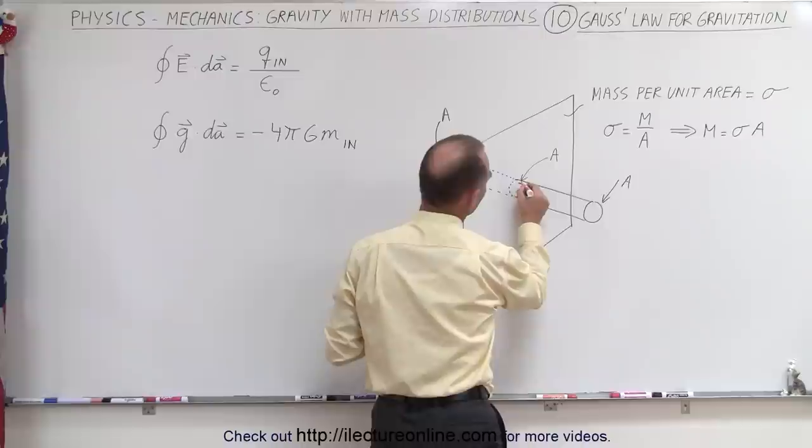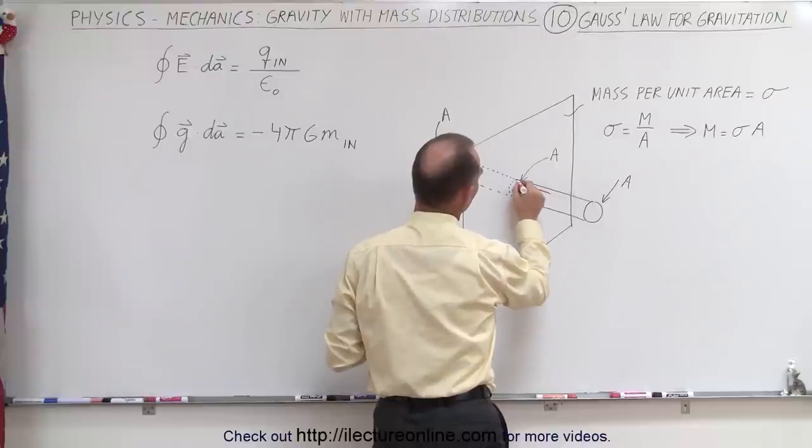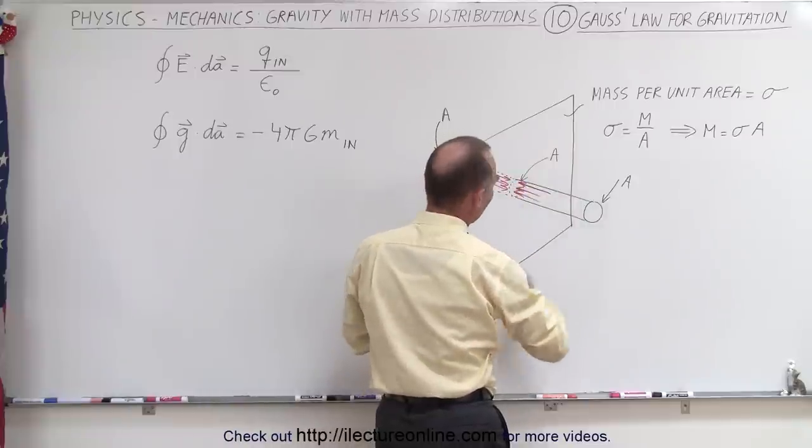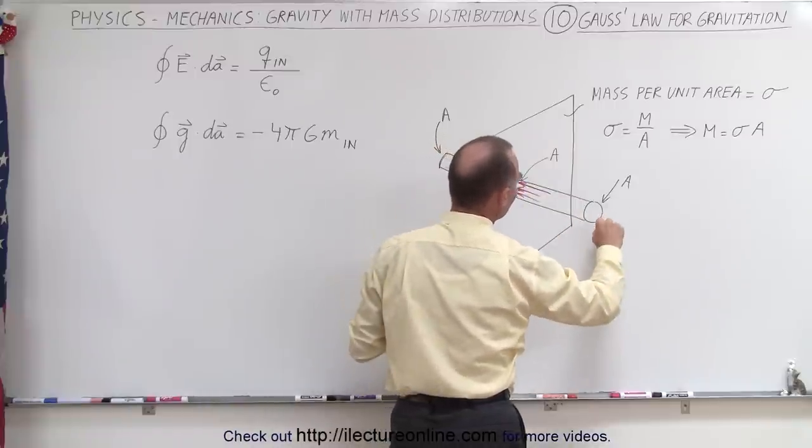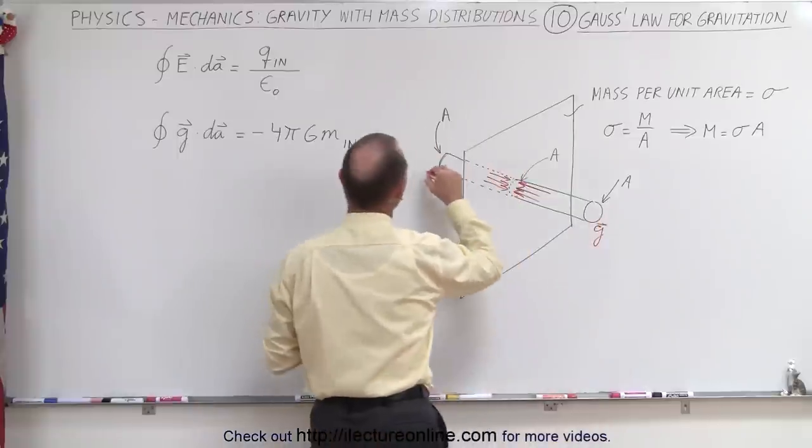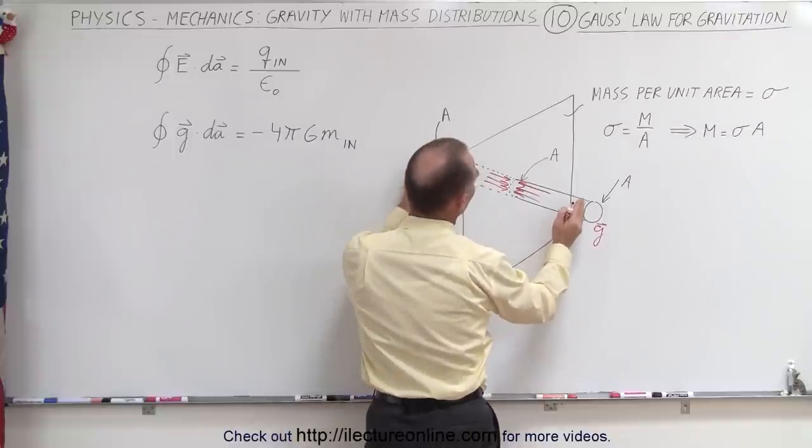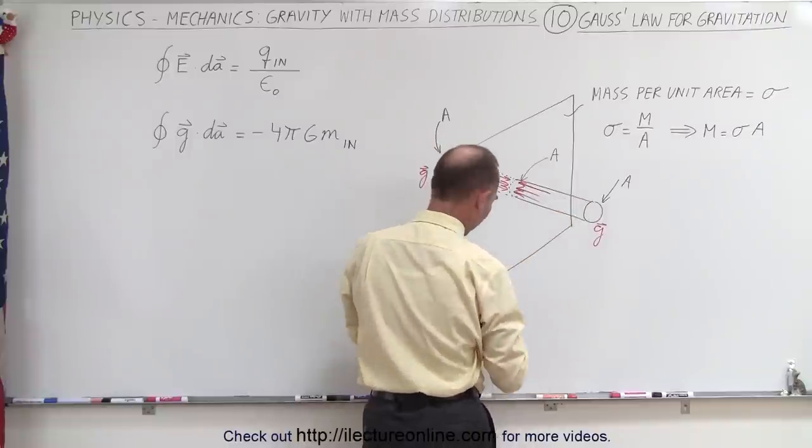So you can see that there'll be a gravitational field pointed towards the sheet from the back and from the front. We have a gravitational field on one side and on the other side. If we're a certain distance away, we want to know what the strength of that field is.